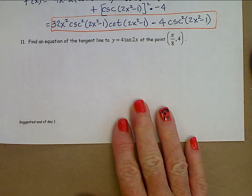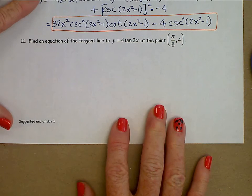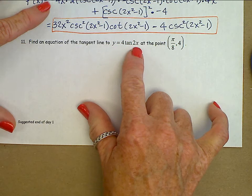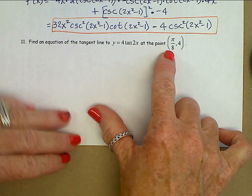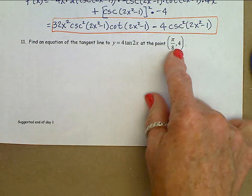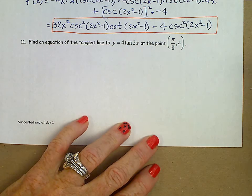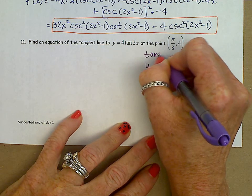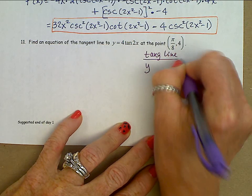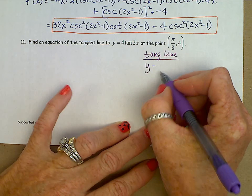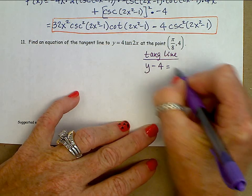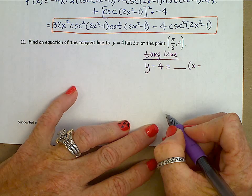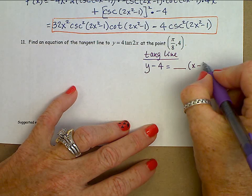Last one. Find an equation of the tangent line to Y equals 4 tangent(2X) at the point (pi over 8, 4). Let's start the answer. Here's your tangent line: Y minus 4 equals slope times (X minus pi over 8). The Y value is 4 and the X value is pi over 8.